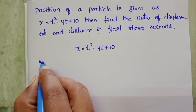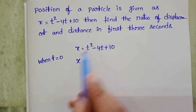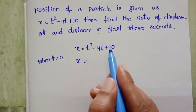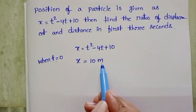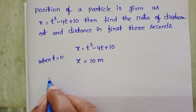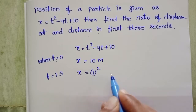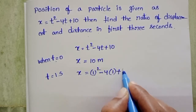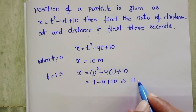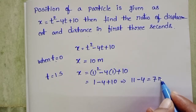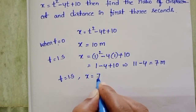When time equals 0, substitute t=0 into the position equation — the first and second terms become 0, so x equals 10 meters. When time equals 1 second, position is 1 squared minus 4 times 1 plus 10, which gives 1 minus 4 plus 10 equals 7 meters.